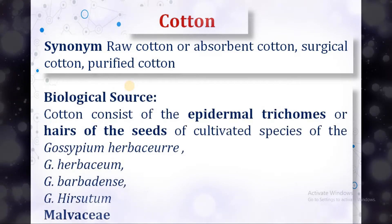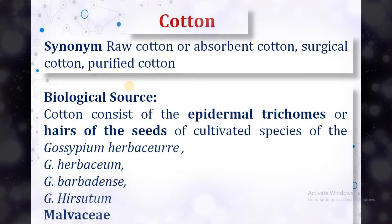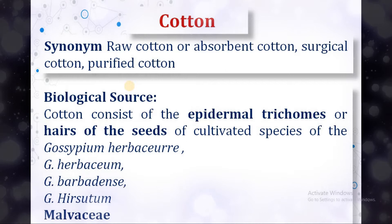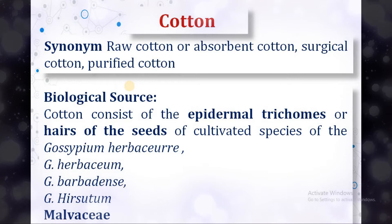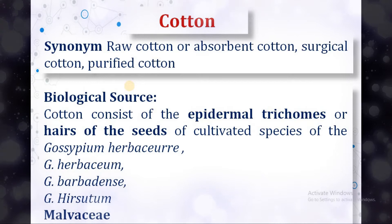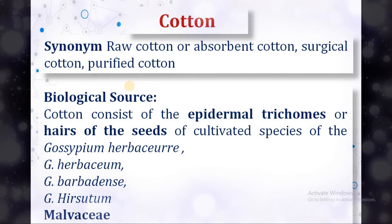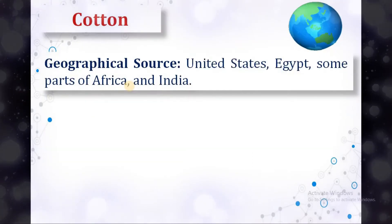Cotton consists of epidermal trichomes or hairs of the seeds of cultivated species of Gossypium herbaceae, Gossypium barbadense, and Gossypium hirsutum, belonging to the family Malvasiae. In short, cotton consists of epidermal trichomes or hairs of seeds of different species of Gossypium, all belonging to the family Malvasiae.